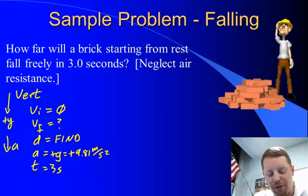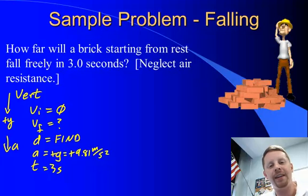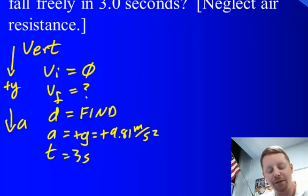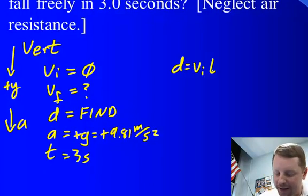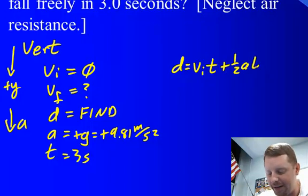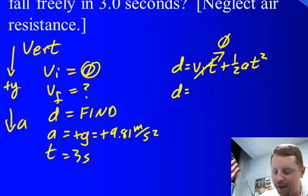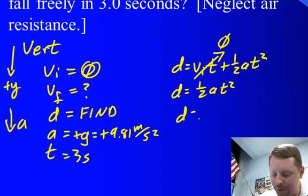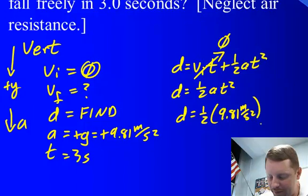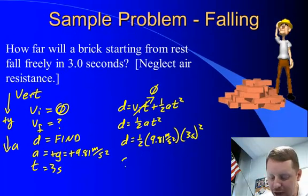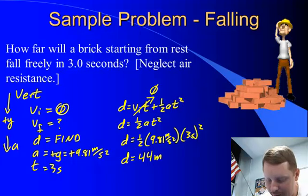We know three things in our vertical motion table, so we can use our kinematic equations to solve for the others. Let's pick an equation to solve for d directly: d equals vi*t plus one-half a*t². Vi is zero, so that term becomes zero: d equals one-half times 9.81 meters per second squared times 3 seconds squared. Putting that into my calculator, I get an answer of about 44 meters.